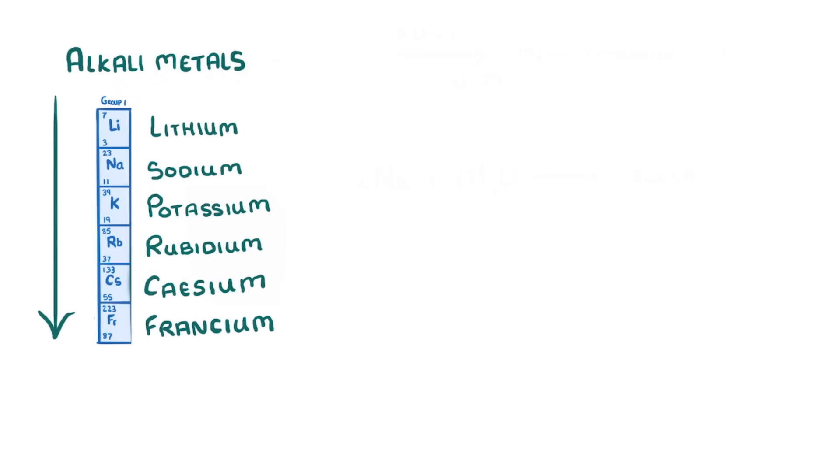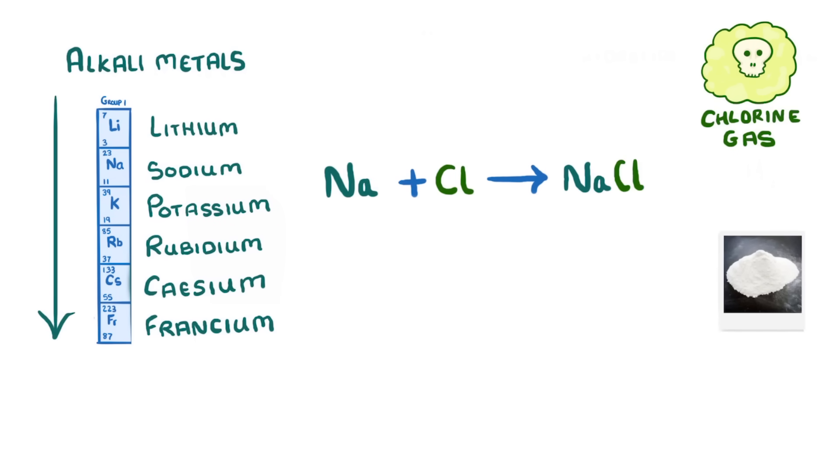Group 1 metals also react vigorously when heated in chlorine gas. And in this case, they form white metal chloride salts. So sodium plus chlorine would form sodium chloride. And again, the reactions will become more vigorous as you go down the group.